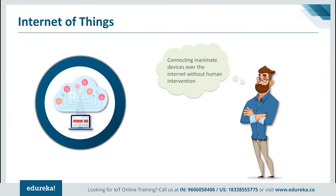Computers and therefore the Internet are almost wholly dependent on human beings for information. Nearly all data available on the Internet today was first captured by human beings — by typing, pressing record, taking a digital picture, or scanning a barcode. People have limited time, attention, and accuracy, which means they're not very good at capturing data about things in the real world. If computers knew everything about things using data gathered without human help, we could track and count everything, reducing waste, loss, and cost — and this gave birth to the Internet of Things.